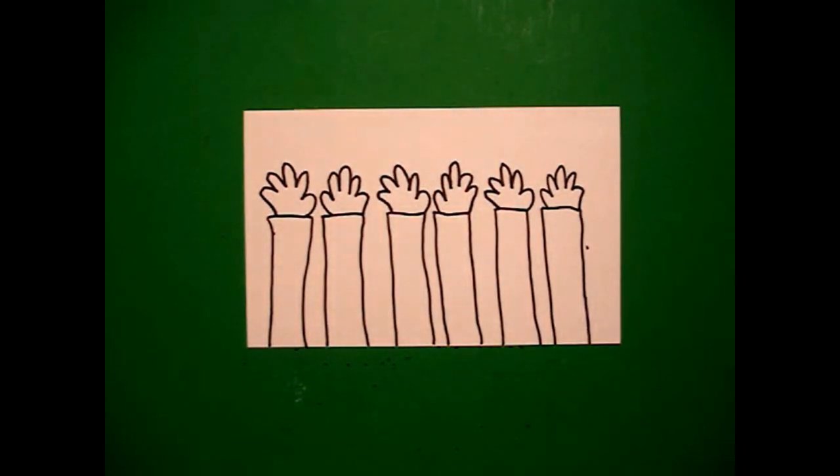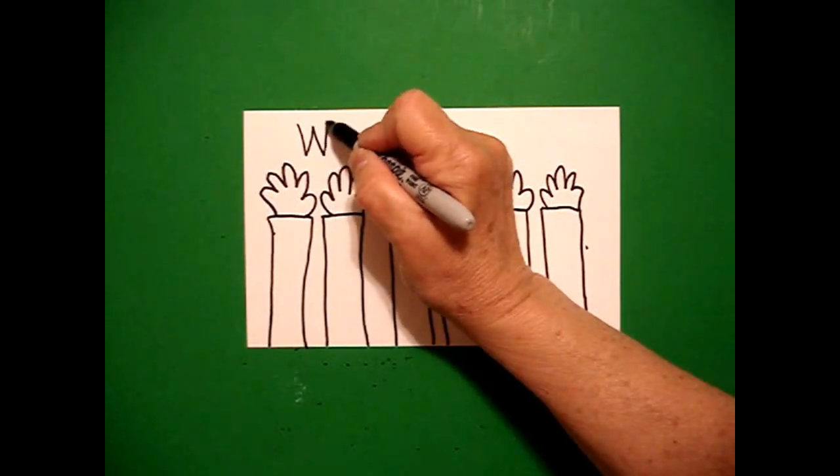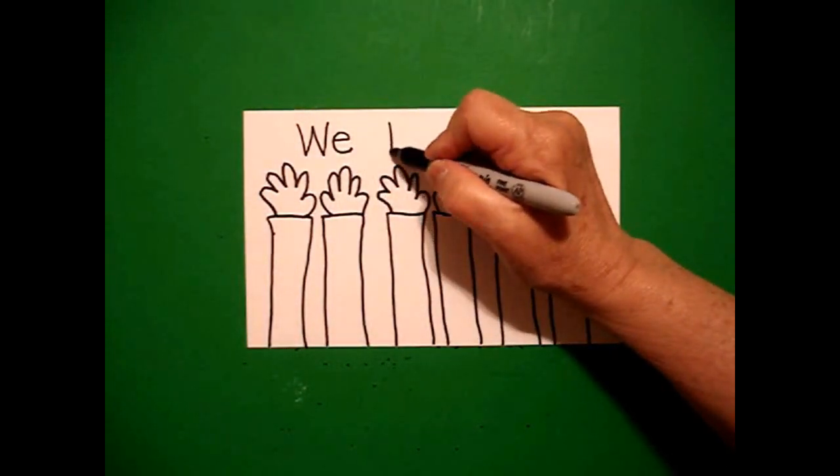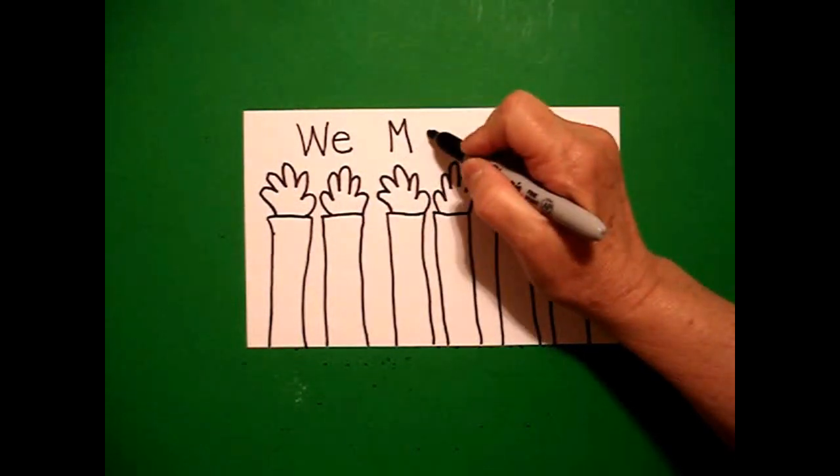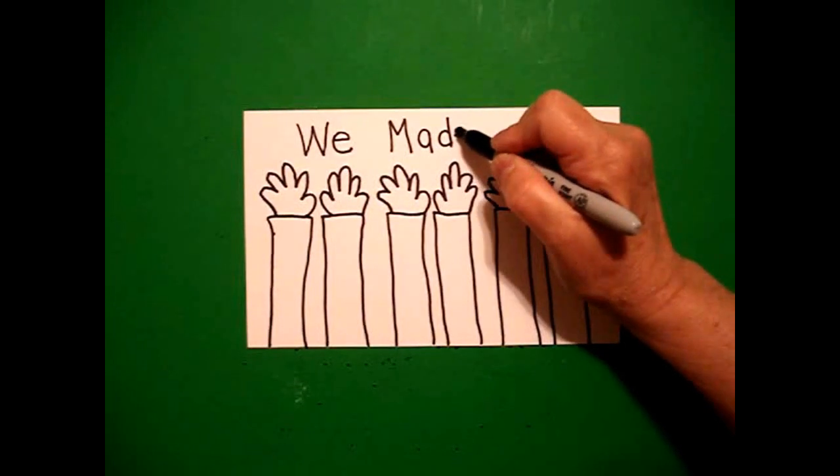Now, right above this, I'm going to write W, E, we, M, A, D, E, we made it.